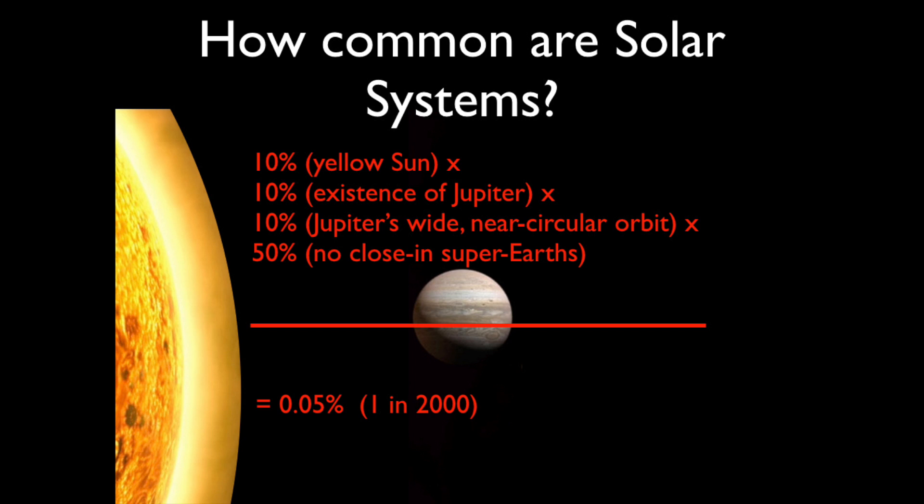There's a 1 in 10 chance of that Jupiter having a wide nearly circular orbit like our Jupiter does, and about a 1 in 2 chance of not having a close-in super-Earth. So adding those all up, there's about a 1 in 2,000 chance of having a solar system among nearby stars.